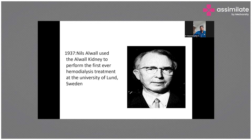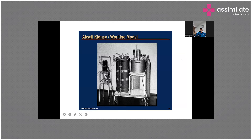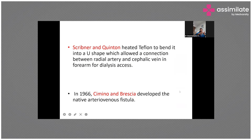That was the first successful human dialysis. Next came the Alval dialyzer in 1937 — the first hemodialysis treatment performed in Sweden — known as the Alval kidney working model. This Alval kidney model was similar to what Dr. Kolff had developed, but it worked better than the Kolff rotating drum dialyzer.